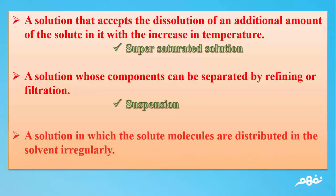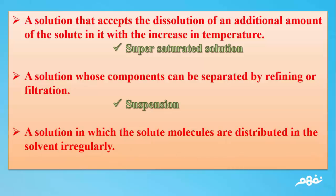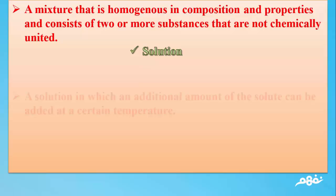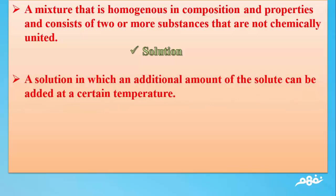Number 12: A solution in which the solute molecules are distributed in the solvent irregularly. The answer: Non-homogeneous solution. Number 13: A mixture that is homogenous in composition and properties and consists of two or more substances that are not chemically united. The answer: Solution. Number 14: A solution in which an additional amount of the solute can be added at a certain temperature. The answer: Saturated solution.